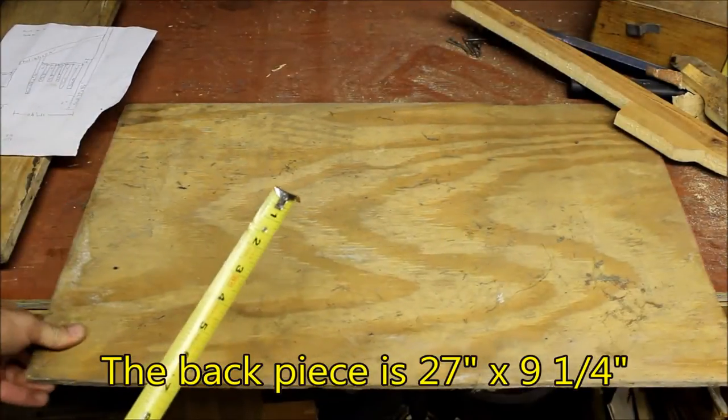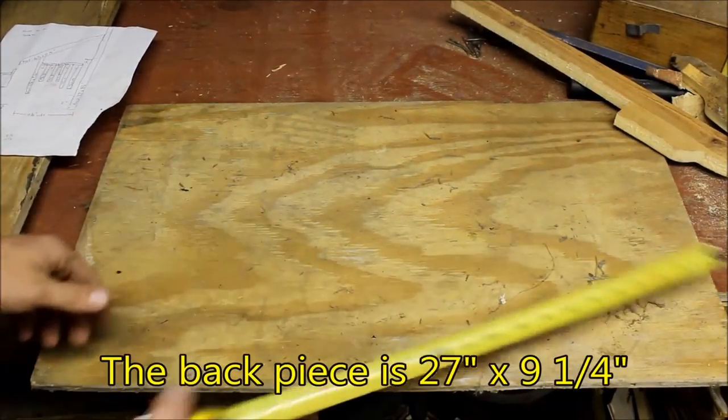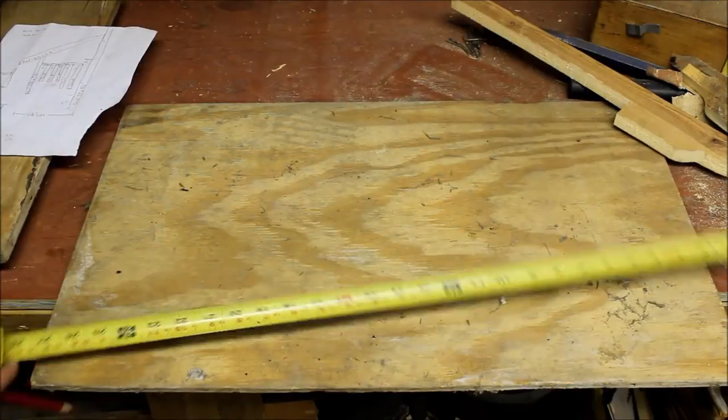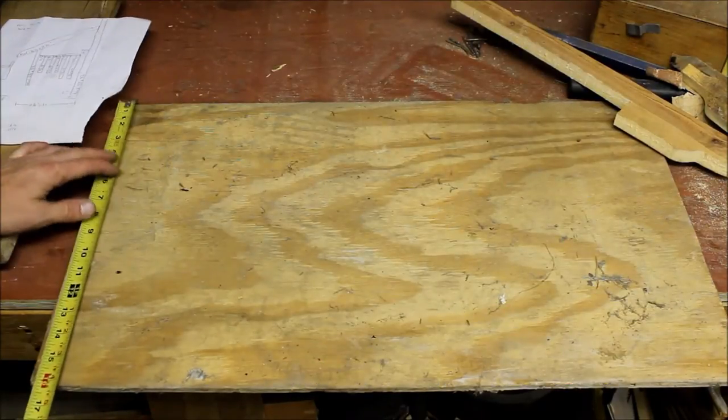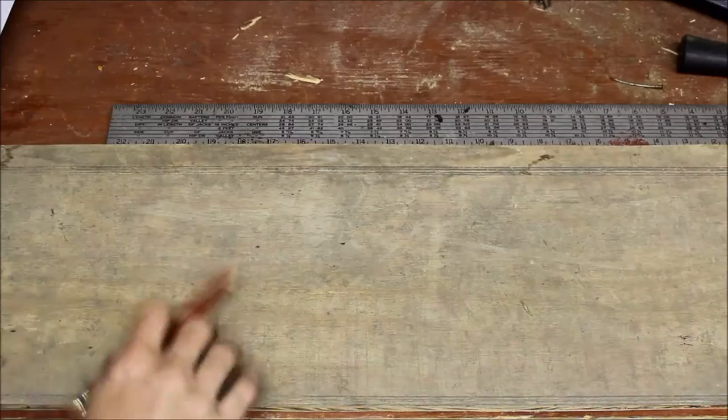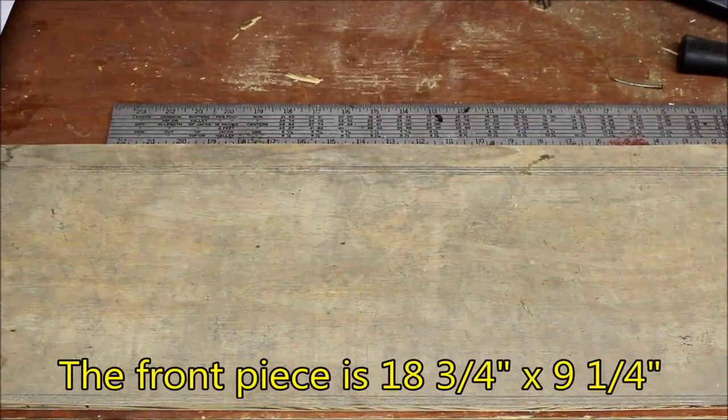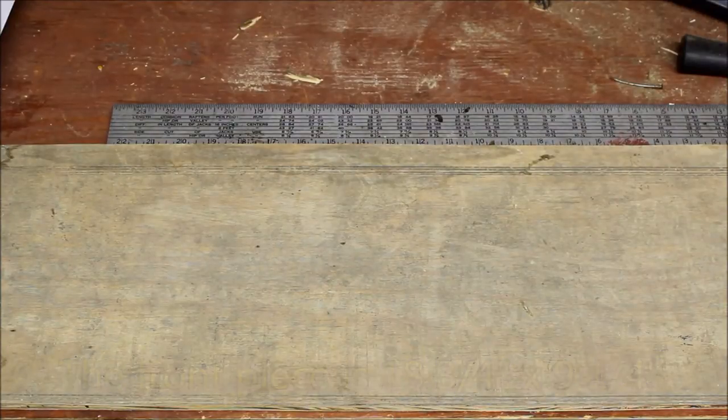Probably the first one I'm going to start with, that's going to be the back piece. So I want something that's going to be fairly sturdy. This one happens to be 27. So I'm going to rip this down to 9 1/4, simply rip that on the table saw. The next step we're going to do is make the front, and that's 18 3/4 by 9 1/4.